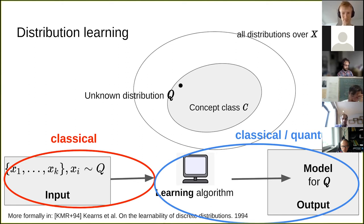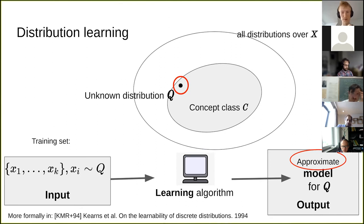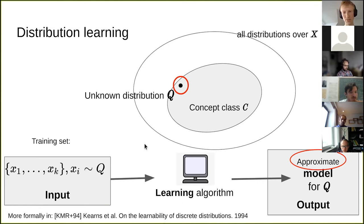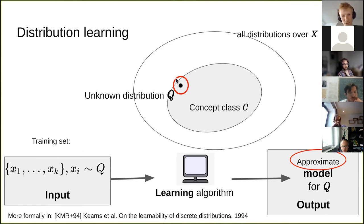The learning algorithm shouldn't be required to output an exact description of the model, only an approximate one. From a finite number of samples it would be impossible to model the right distribution exactly, so we allow the algorithm to be a little bit wrong in some metric of distance in the space of distributions — we take that to be the total variation distance, though it could also be KL divergence and I think that wouldn't change our results very much.